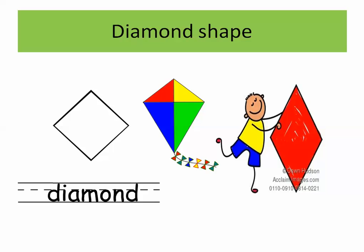Today we have a new shape which is called diamond. It has four sides — count with me: one, two, three, four. Diamond — it begins and ends with the sound D. Repeat after me: diamond, diamond. Look at this kite — this kite has the diamond shape. As you can see, it has four sides: one, two, three, four.